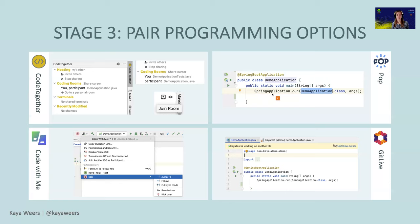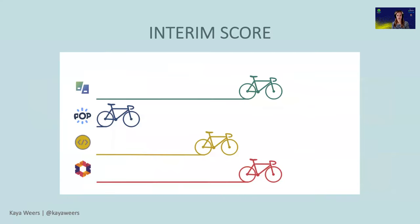It won't come as a surprise that Code With Me won this stage - it has so many options for pair programming, and besides that the debugging is just amazing. And because of this win, they are now in first place together with Git Live. So the green and the pink one are now first, and Pop is still really far behind.